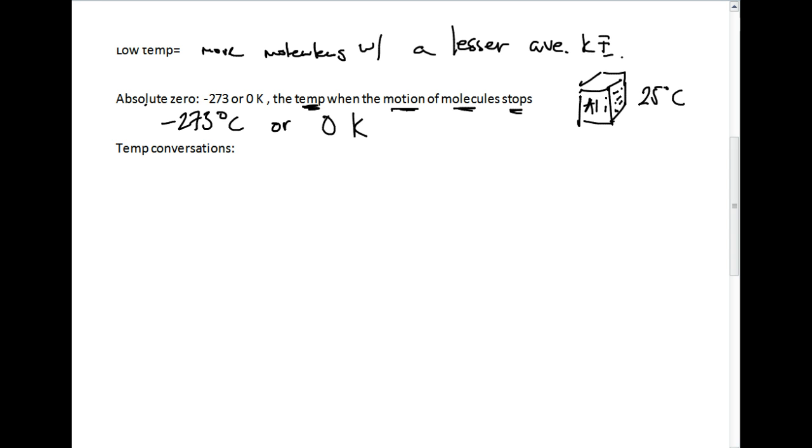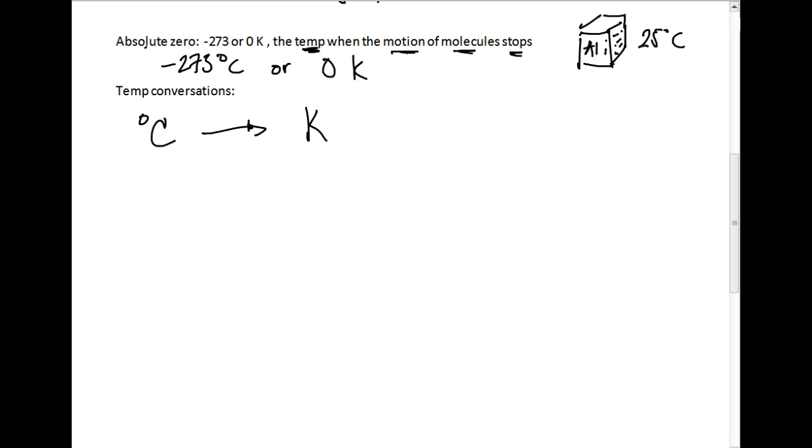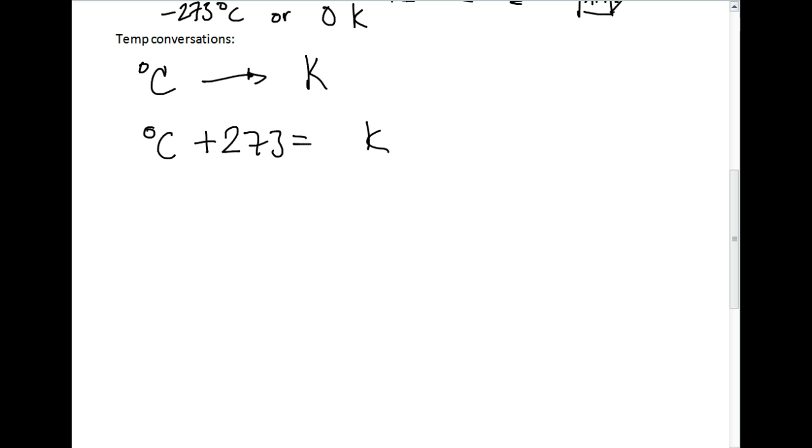Okay, the last thing I want to talk about is temperature conversions, and how do we take the temperature in Celsius and convert it to this new scale called Kelvin. Kelvin is represented by a capital K. It's a relatively simple formula that's given to you on the back of your periodic table. Degrees Celsius, all we have to do is add 273, and that gives us Kelvin temperature.